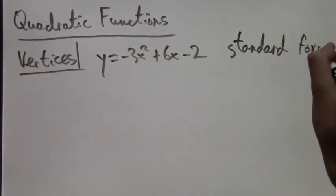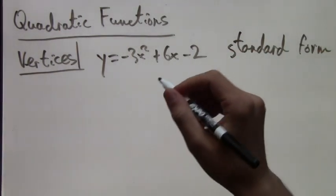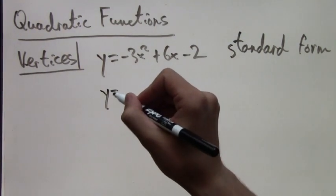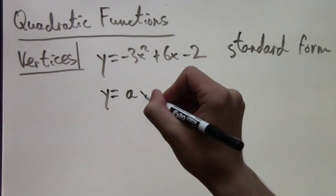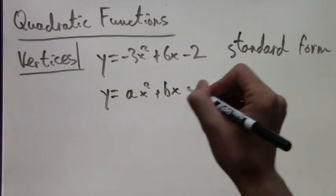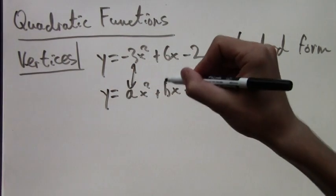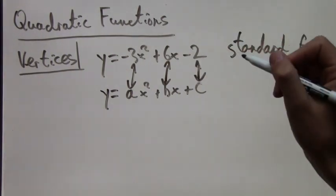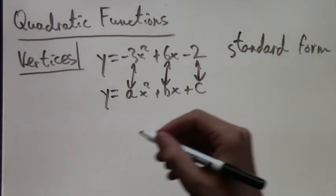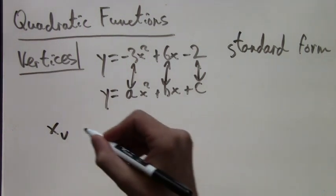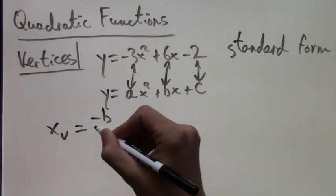So this is indeed standard form. We have our x squared with some sort of multiple, negative 3, and x with multiple plus 6, and c minus 2, the constant. So in general, we have ax squared plus bx plus c, but in our case, we have specific a is negative 3, b is 6, and c is negative 2.